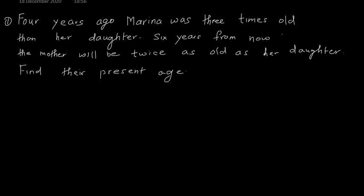Now the first problem: four years ago, Maria was three times older than her daughter. Six years from now, the mother will be twice as old as her daughter. Find their present ages. We have Maria and her daughter, so let us first present this information in a manner which is more understandable. I will write Maria and daughter.